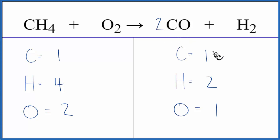So we have one times two. That'll give us two carbons, but the one times the two, that'll give us two oxygens. So the oxygens, those are balanced.